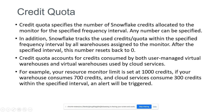The credit quota accounts for credits consumed by both user-managed virtual warehouses and the virtual warehouses used by cloud services. For example, if the resource monitor limit is set to 1000 credits, and your warehouse consumes 700 credits while cloud services consume 300 credits within the specified interval, an alert will be triggered because the combined total of 1000 credits reached the quota.